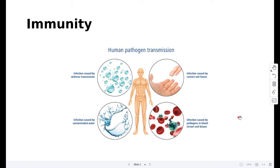So, pathogens can be passed on from host to host in different ways. The first is direct contact and the second is indirect contact. So, human pathogen transmission can be airborne, can be caused by contaminated water, can be infection caused by pathogens in the bloodstream and tissues, and infection caused by contact and feces.